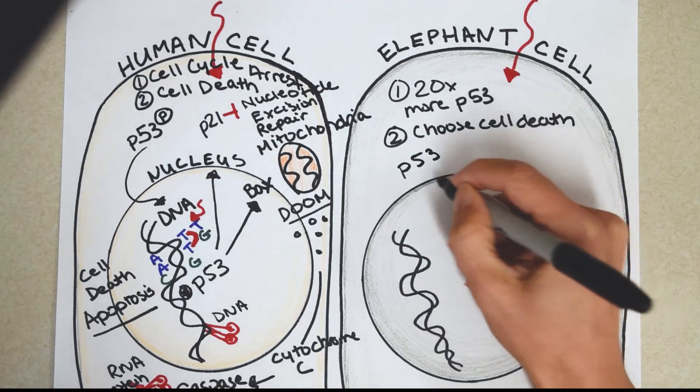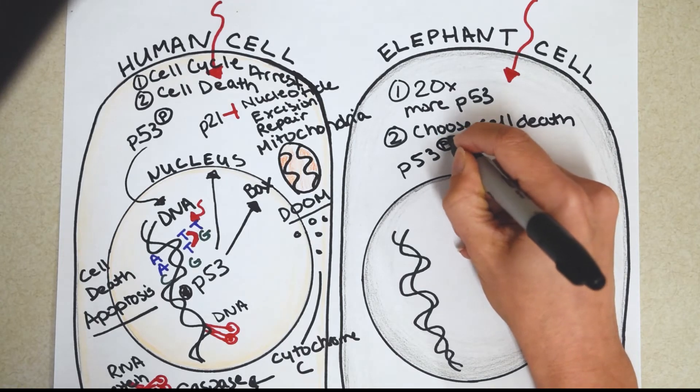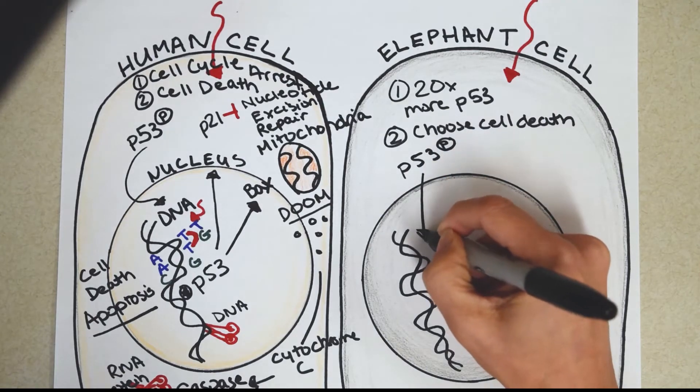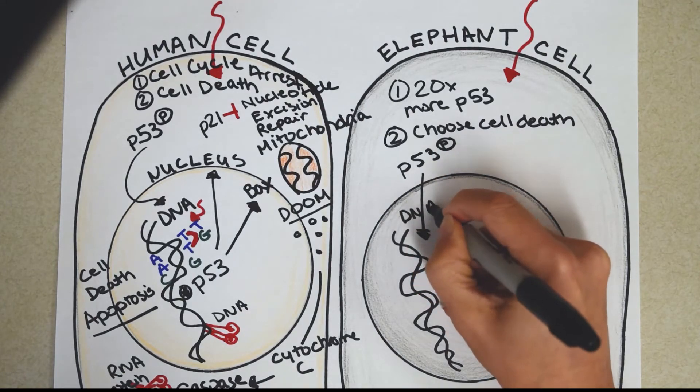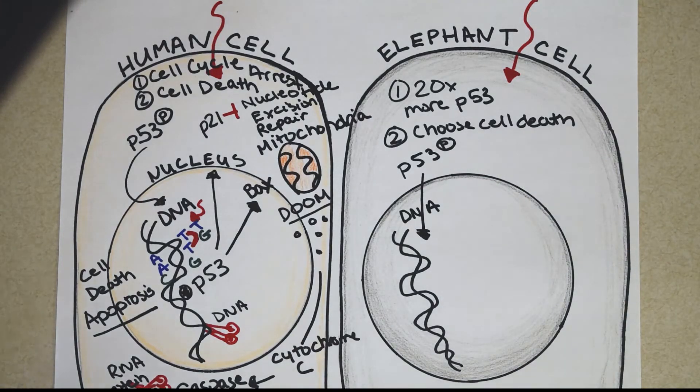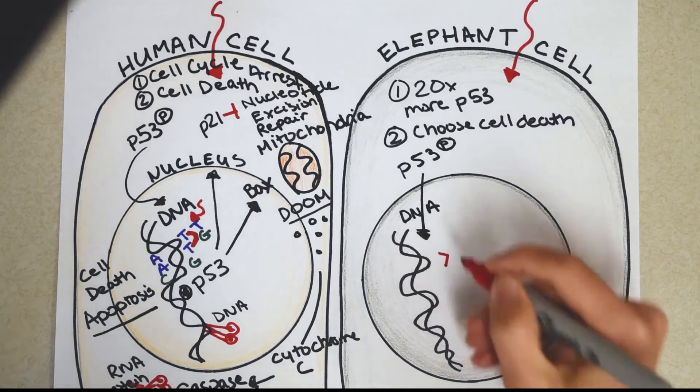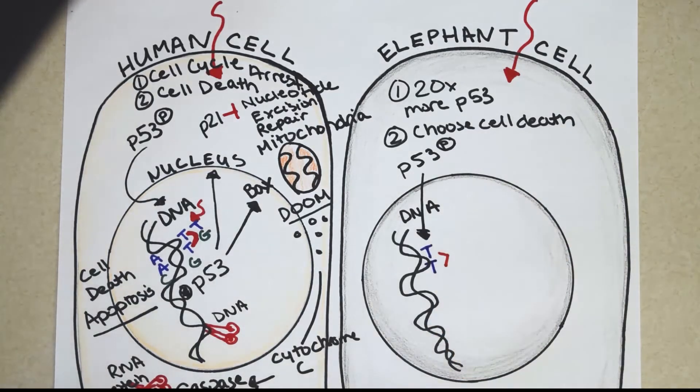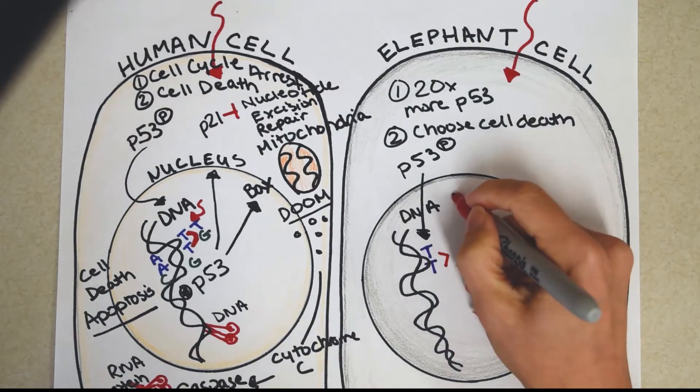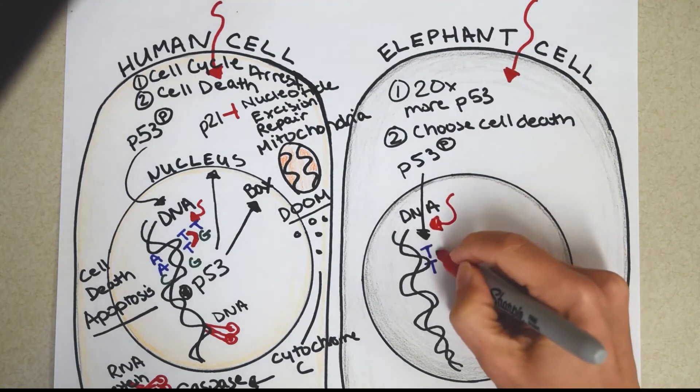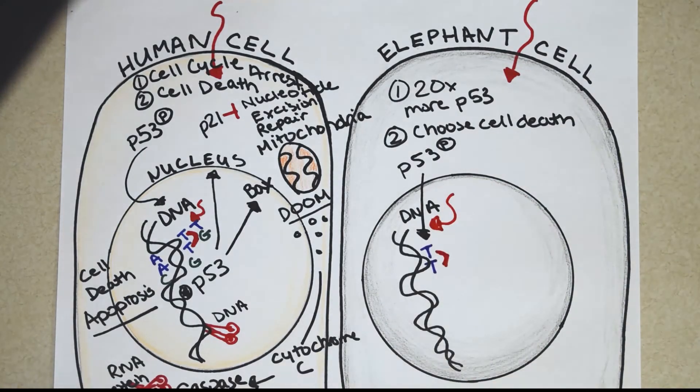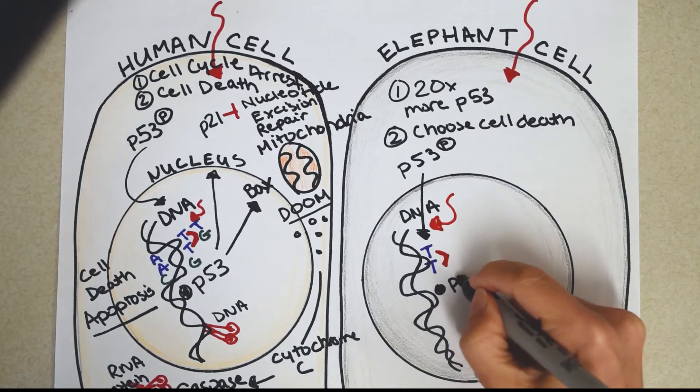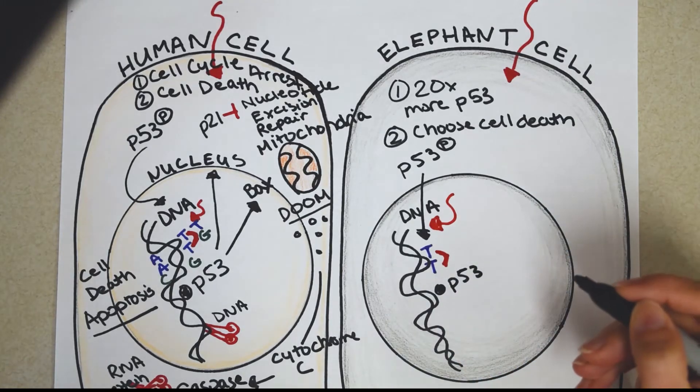Alright, so let's check it out. P53 in the elephant cell. It's going to get phosphorylated, exactly like the human cell. It's going to enter the DNA. Same thing. It's going to identify thymidine dimers that happened due to the ultraviolet radiation. And it's going to kink out the DNA. But the elephant cells, they don't mess around. So P53 is going to activate cell death most of the time.